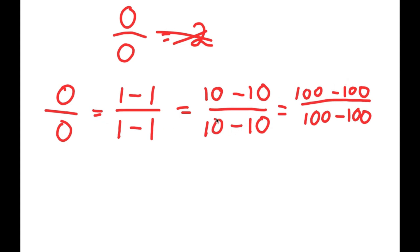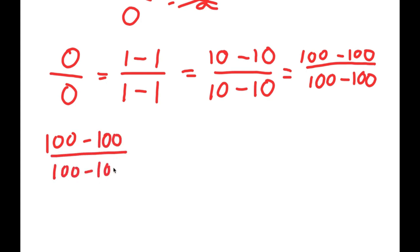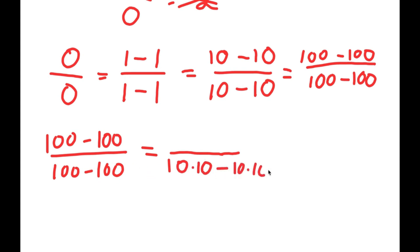Because all of this is true, now I can start by making things a little more complicated. So let me rewrite this: I have 100 minus 100 over 100 minus 100. Now, 100 is the same thing as 10 times 10, right? So for my denominator, I'm going to write this as 10 times 10 minus 10 times 10. And for my numerator, 10 times 10 is the same thing as 10 squared, so I'm going to write 10 squared minus 10 squared.